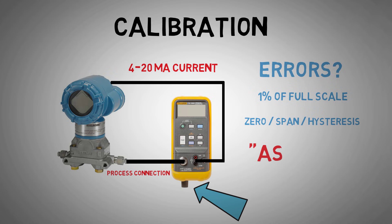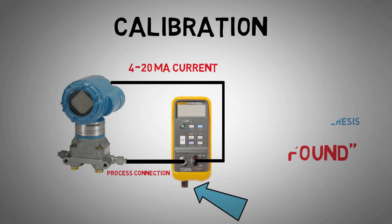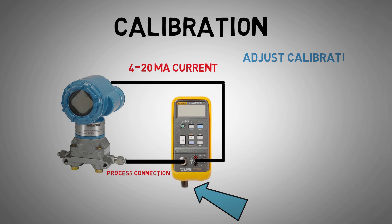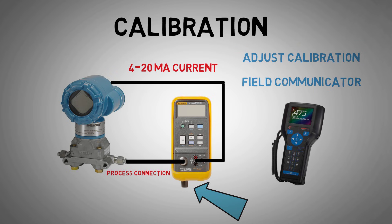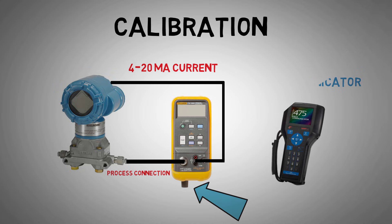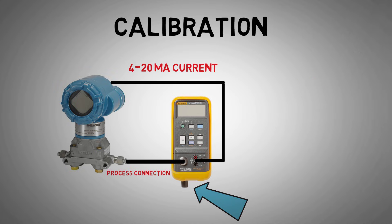This is called the as-found test. If the pressure transmitter is out of its calibration limits, we would adjust the range or zero, either through local potentiometers or buttons on the transmitter, or more commonly on newer equipment, digitally via a field device communicator such as a HART communicator. We would then repeat the test to ensure we have met our calibration standard. This is called the as-left test.